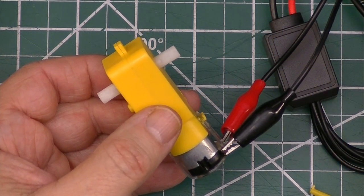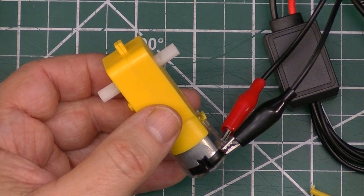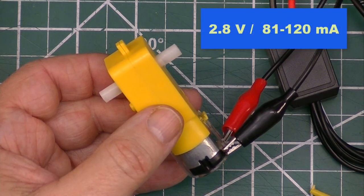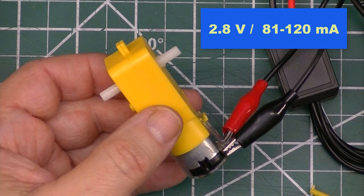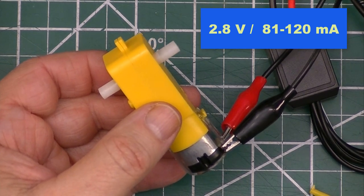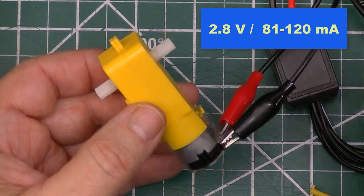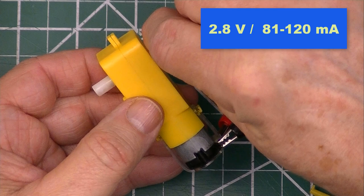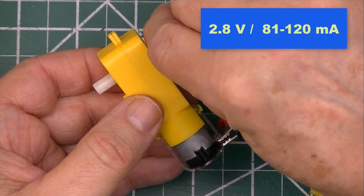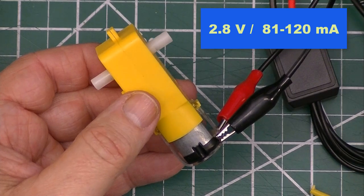Here I've hooked up the TT 130 to a power supply. I have it dialed in at about 2.8 volts and it's using about 81 milliamps of power. Put a little load on and it goes up to about 120 milliamps of power.